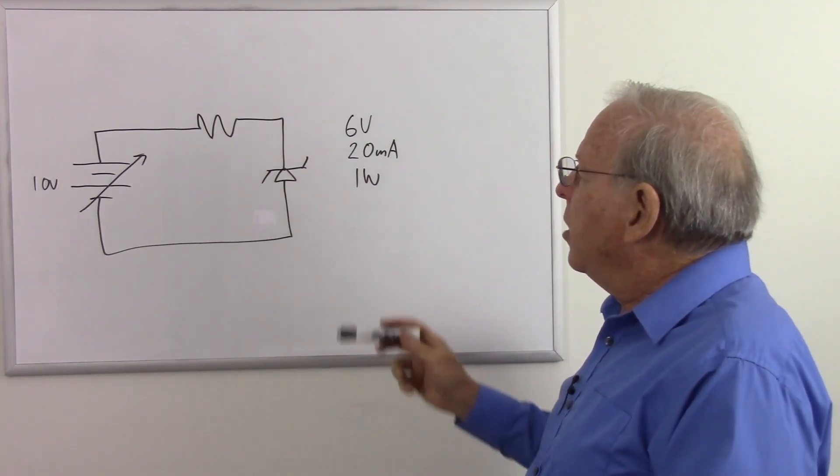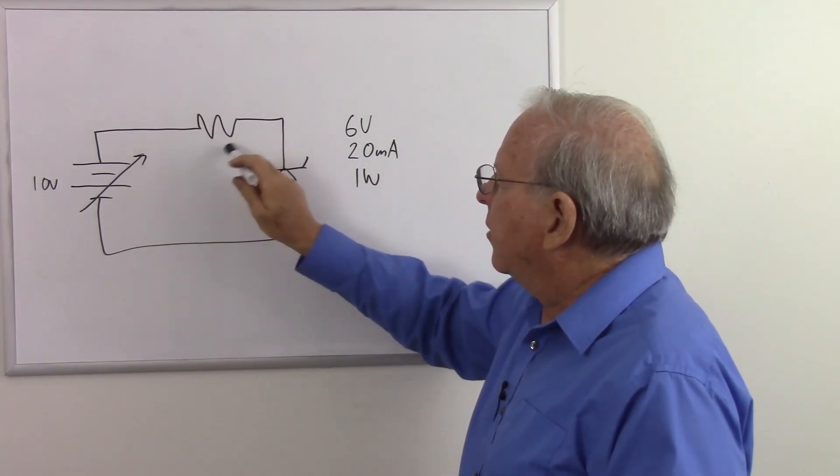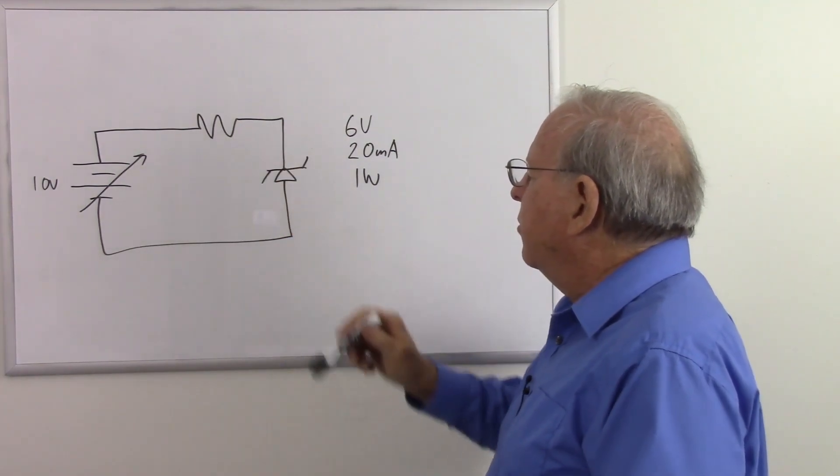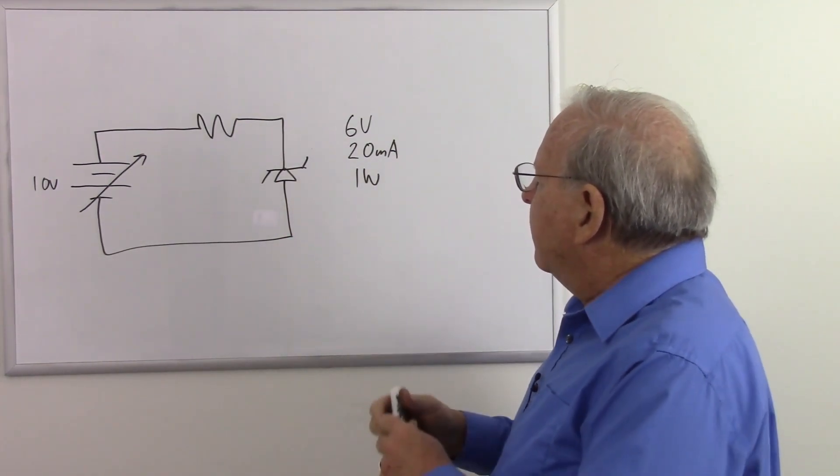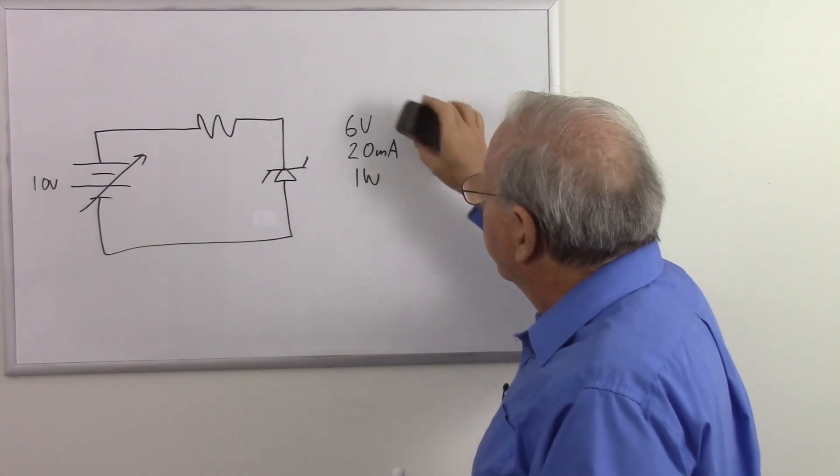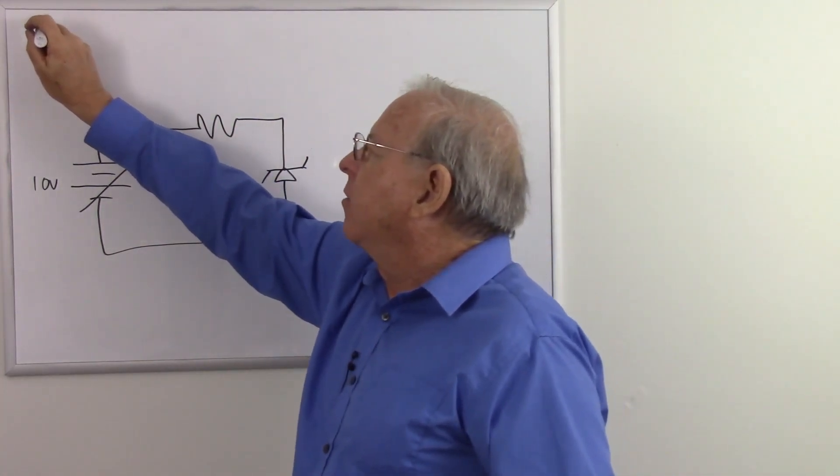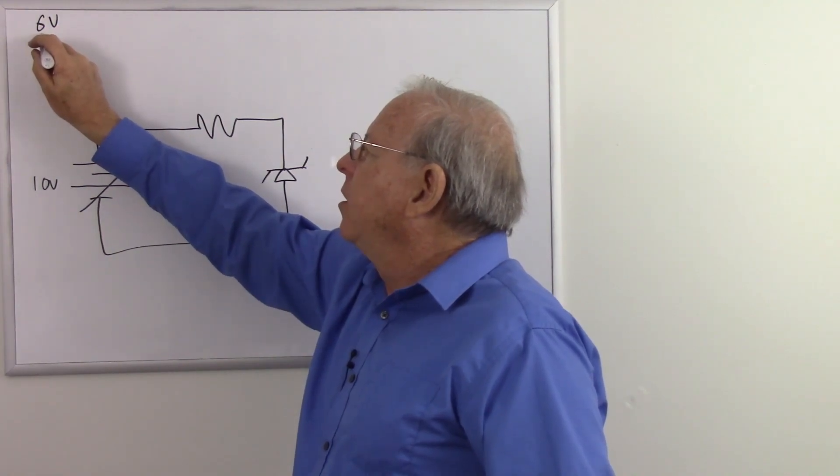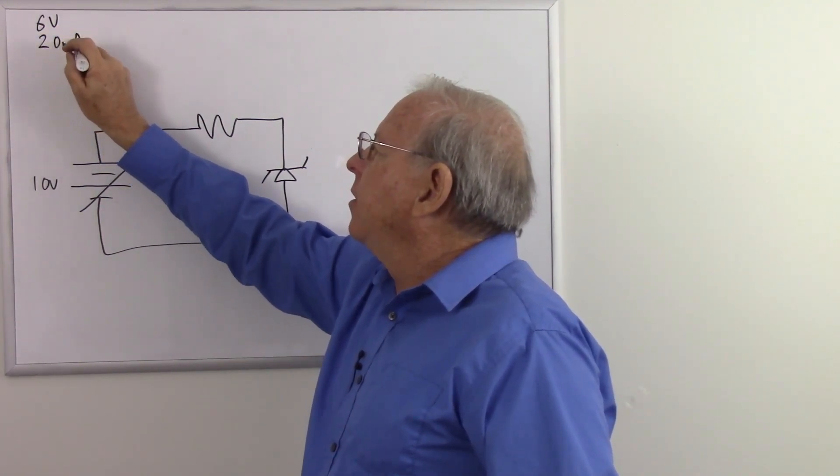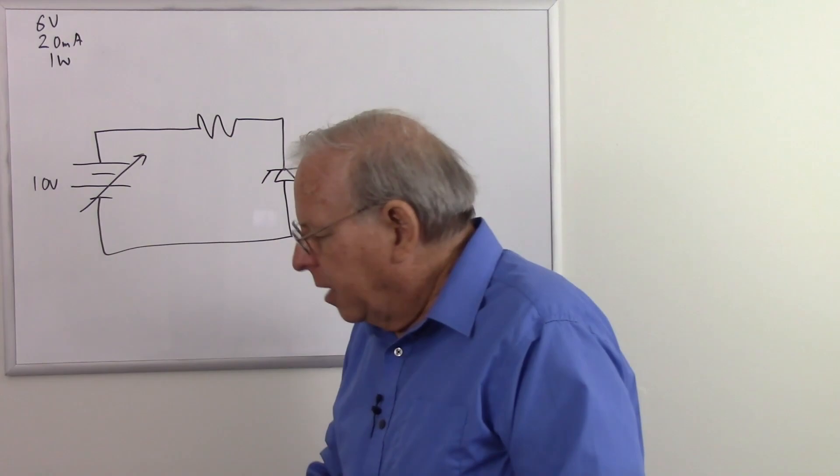So there's our specifications for our Zener diode. So how are we going to design the circuit? We need to set this resistor here to be just the right resistor. So what do we have? Well, let's get this clutter out of the way. 6 volts, 20 milliamps, 1 watt. I'll write that over here to get it out of the way. 6 volts, 20 milliamps, 1 watt.